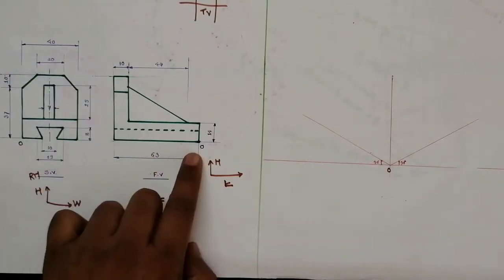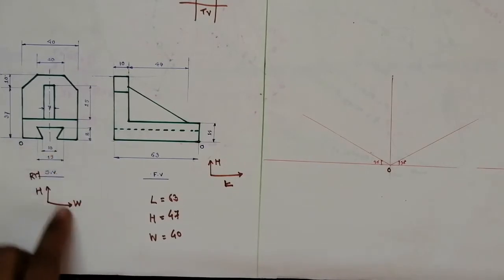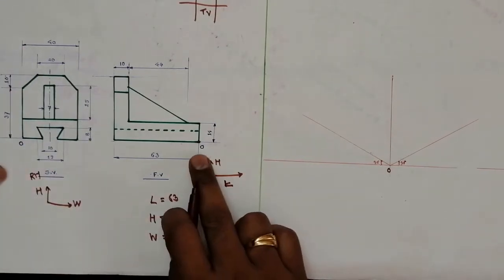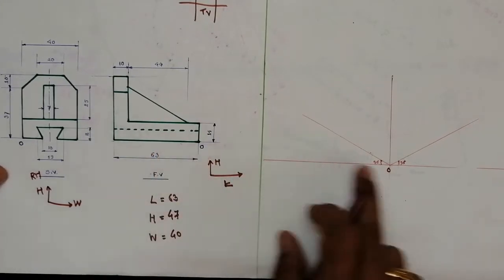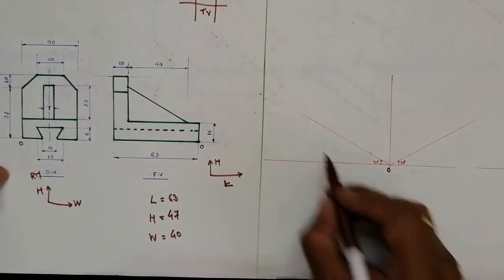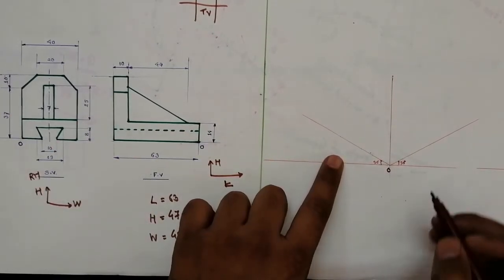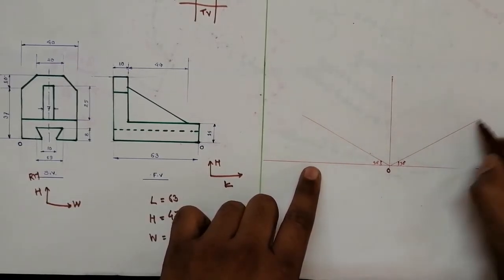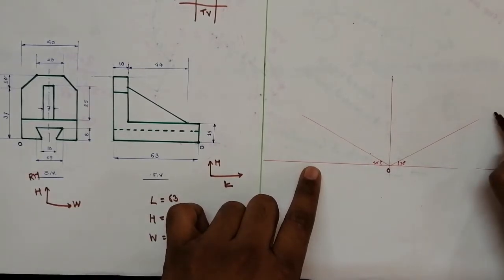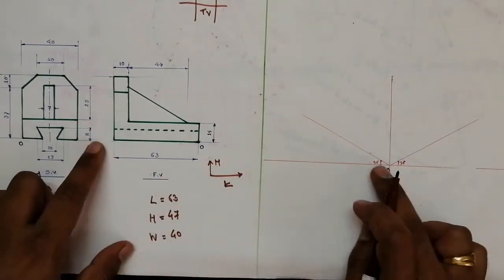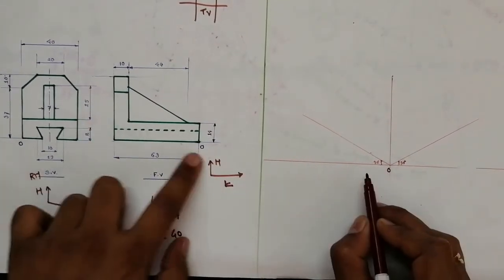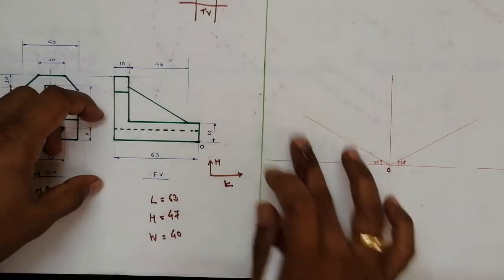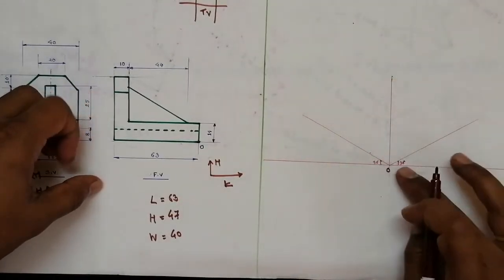For the front view, horizontal is length and vertical is height. For the side view, horizontal is width and vertical is height. We have calculated the dimensions. Origin is given here. Along this axis we will take length, and the other axis will represent the width. Vertical is always height. So in our isometric axes, L is here, H is here, and W is here.